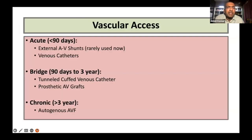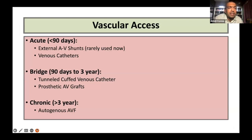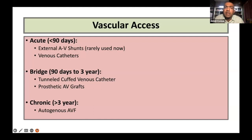Vascular access can be of three natures depending on the time. Acute, which is less than 90 days — usually we use venous catheters as a bridge. That is from 90 days to 3 years, one could use a tunnel cuff venous catheter or prosthetic AV grafts. For somebody who requires vascular access for more than 3 years, autogenous AV fistula is the best possible access.